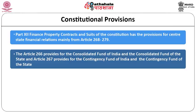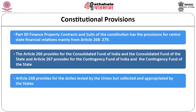Similarly, Article 267 provides for the Contingency Fund of India, and as in the case of Article 266, there is a Contingency Fund of each state also. Article 268 provides for duties levied by the union but collected and appropriated by the states — meaning the state is empowered to collect those duties and appropriate the proceeds from them.